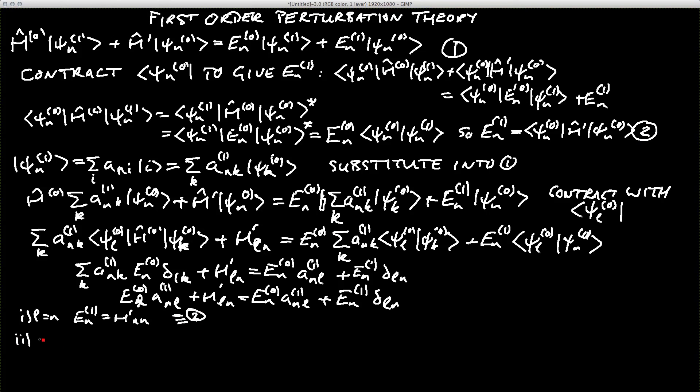The second case that we have to think about is when l does not equal n, and in that case, the right-hand side, the final term, disappears because delta is 0. And we end up with the case where we have anl(1) is equal to h prime ln divided by En of 0 minus El of 0. And so this gives us the formula for psi n of 1.